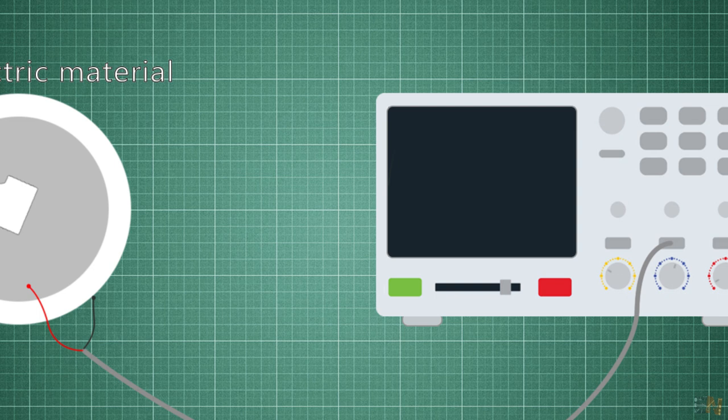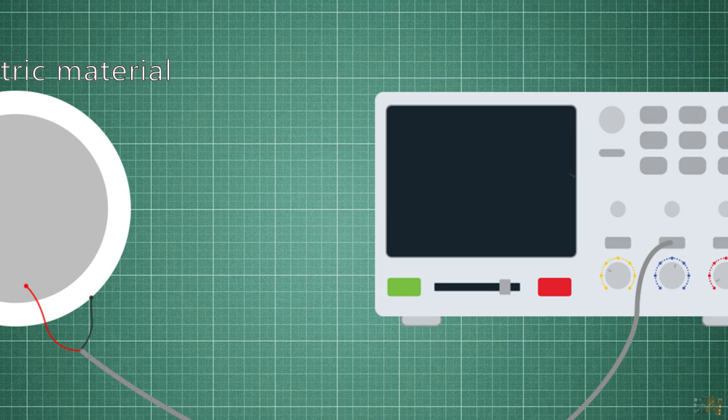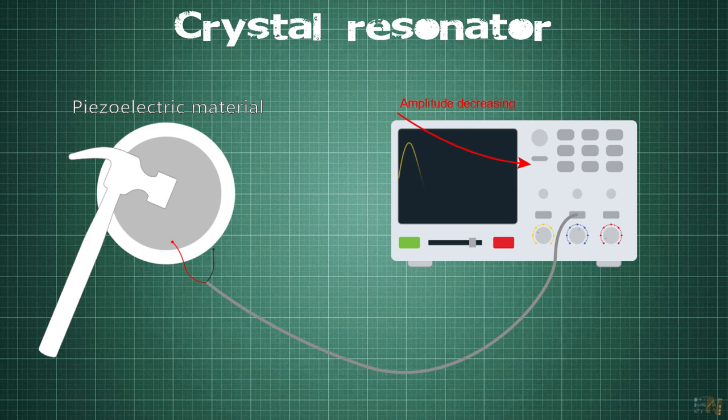But once again, this oscillation will drop and we need to strike the crystal once again in order to create a stable ongoing oscillation. For that we need an oscillator circuit, that we will see in a moment.